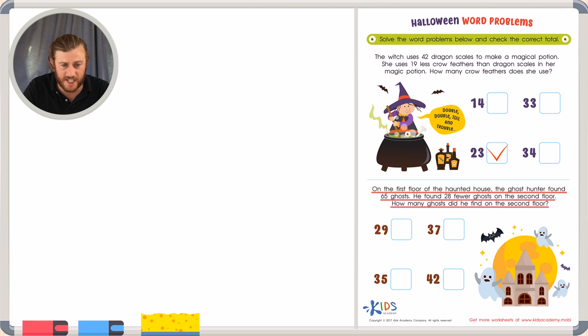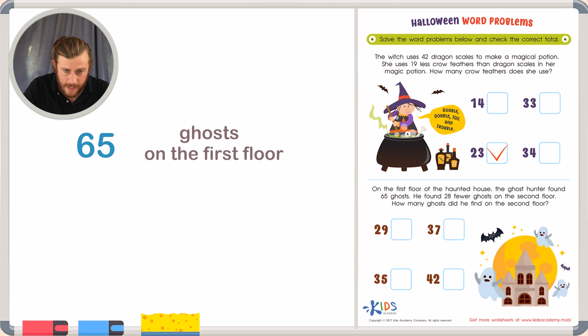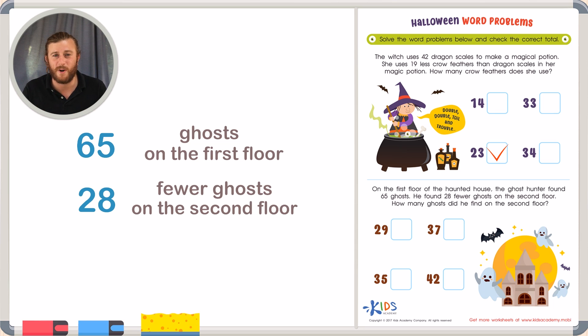Okay, so I know that he found 65 ghosts on the first floor. He also found 28 fewer ghosts on the second floor. Now again, when I see the word fewer, my mind immediately thinks fewer, less than. We're taking away. So that must mean subtraction. So for this problem, 28 fewer ghosts,